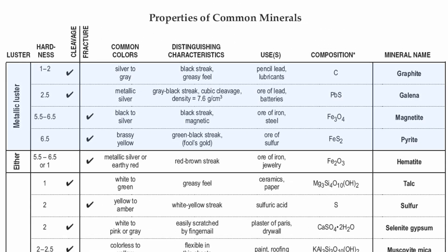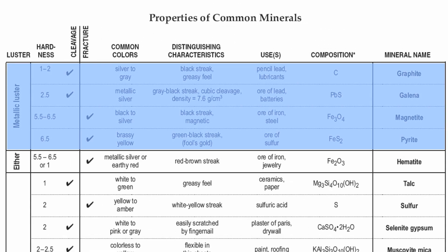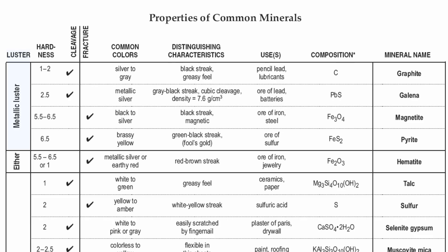Let's first focus on your metallic luster minerals. These minerals are probably going to be one of the smaller groups — you only have four of them: graphite, galena, magnetite, and pyrite. These are all going to have some sort of metallic luster; they're going to look like pieces of metal. Starting over on the left side is your luster, which is going to really be the determining factor in terms of what grouping you're going to look at.